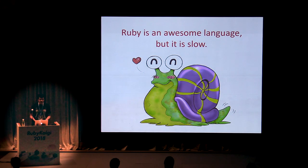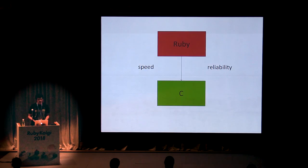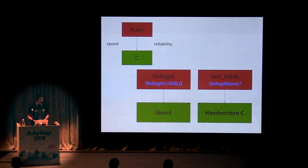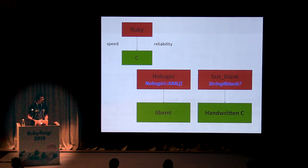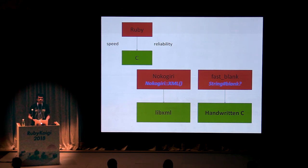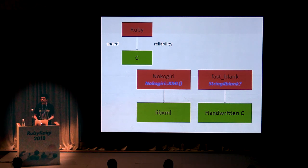We all know that Ruby is a really good language, but it's quite slow. So in order to make Ruby faster, many programmers tend to port their Ruby code to C extensions, mainly for reasons of speed and reliability. Notable examples that use C extensions are Nokogiri and Fastblank. Nokogiri is a wrapper written over the LibXML library, and Fastblank is a plain handwritten C extension. Both gems make their respective tasks much faster by leveraging the power of C and interfacing it with the CRuby interpreter.